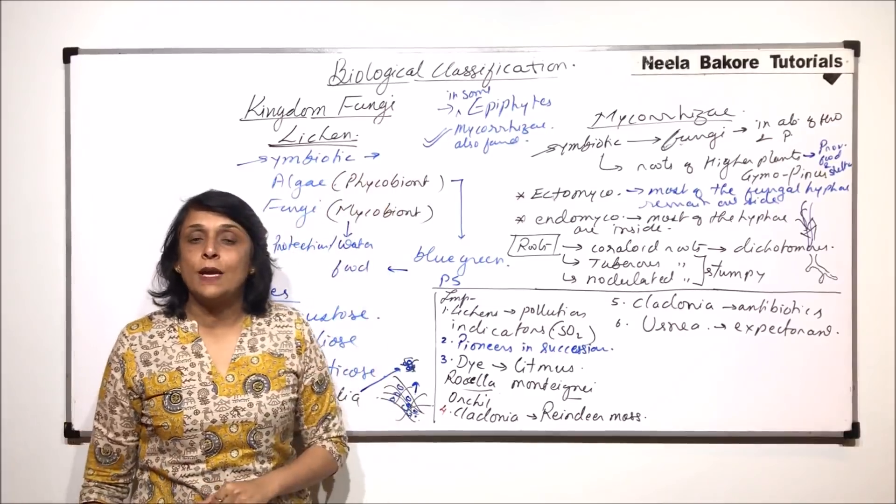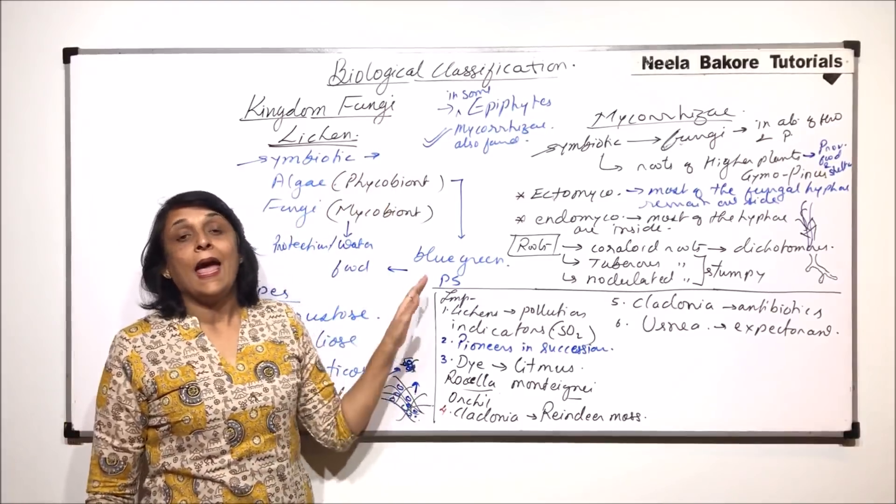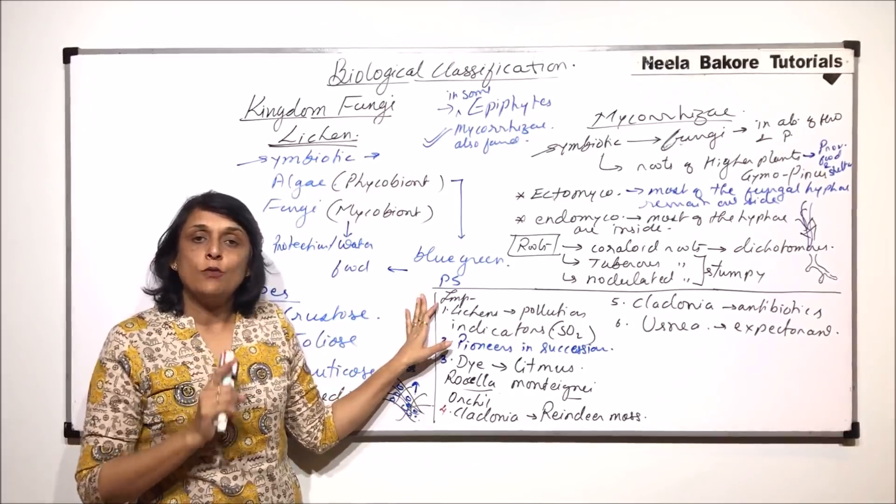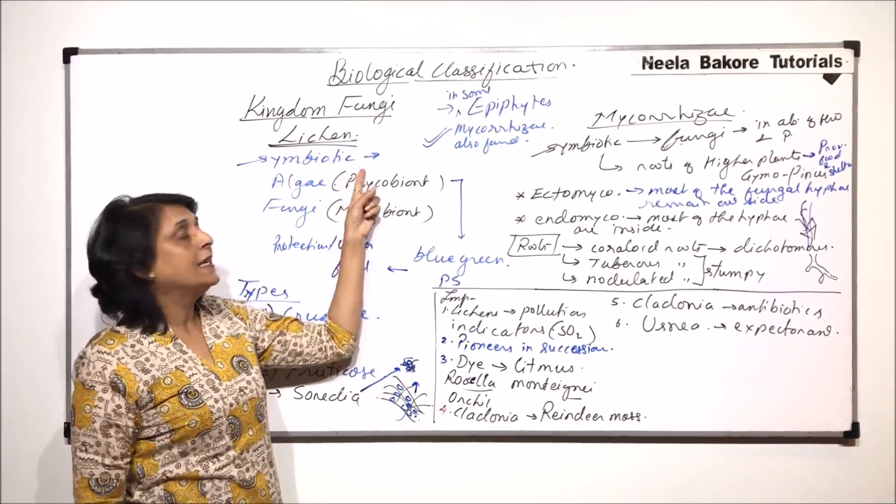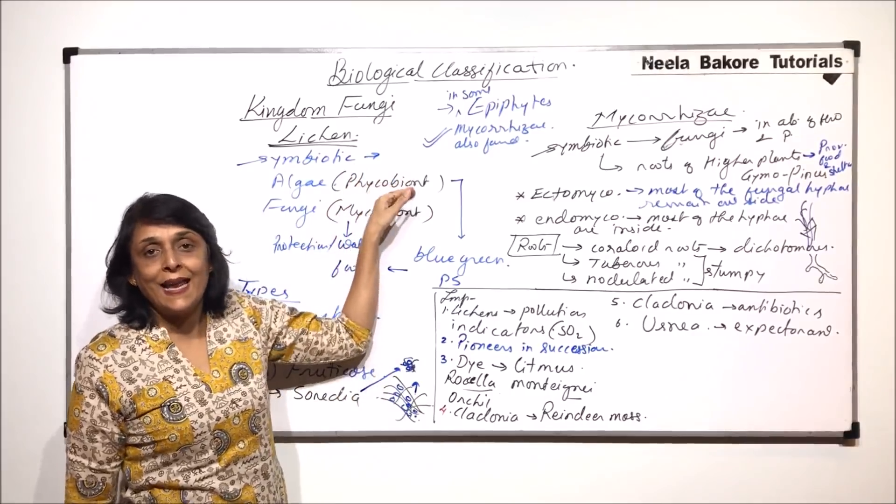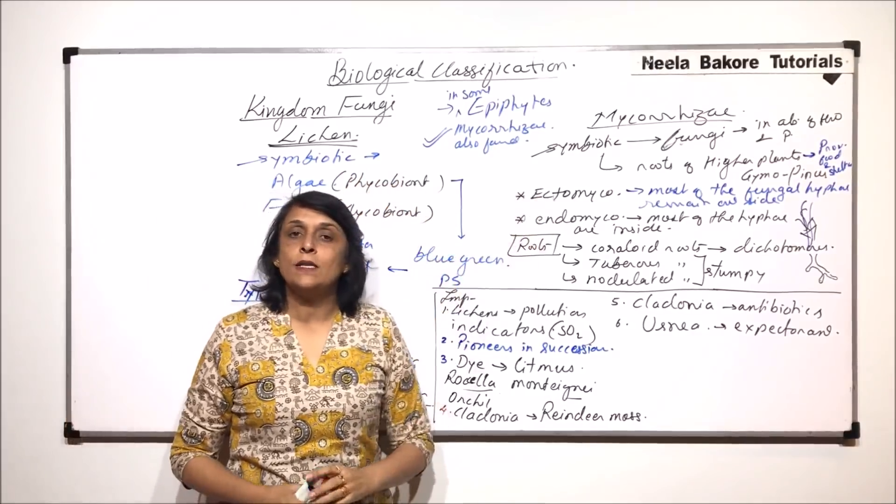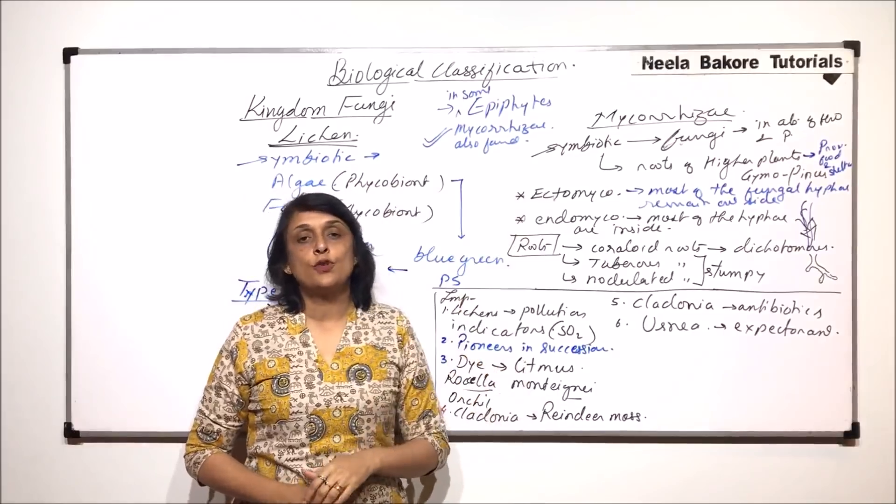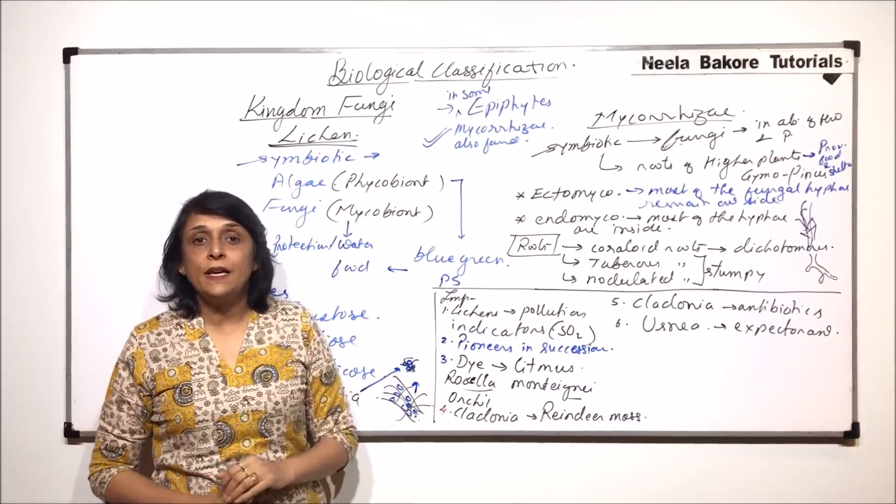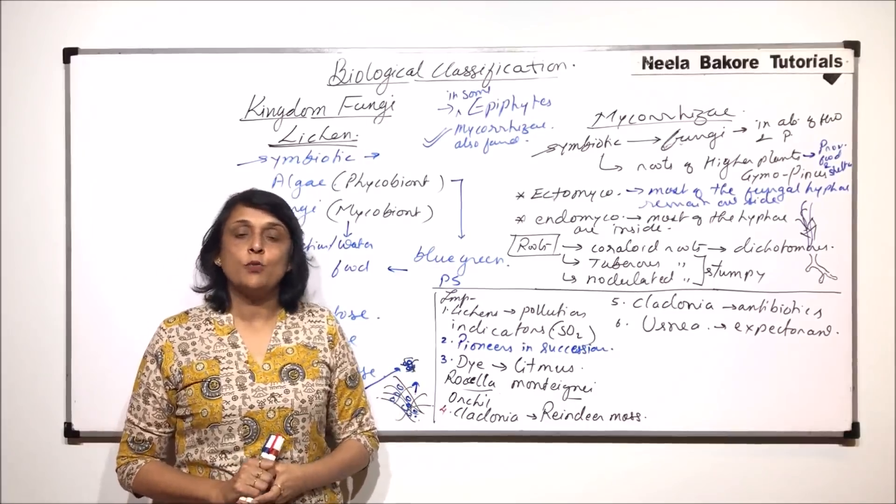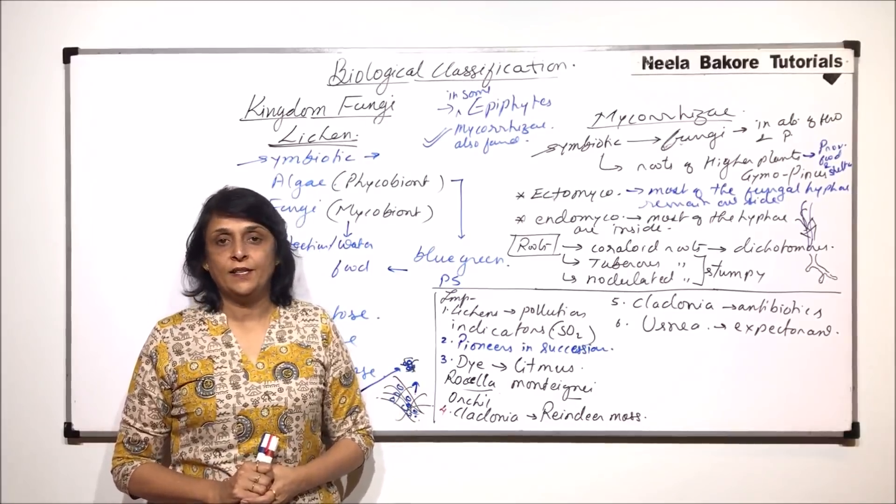So these two, lichens and mycorrhizae, are symbiotic, and one partner out of these categories is fungus. In case of lichen, it is fungus and algae. In case of mycorrhizae, it is fungus and the roots of higher plants. With this, we have completed kingdom fungi. From the next video, we will take up plant kingdom.